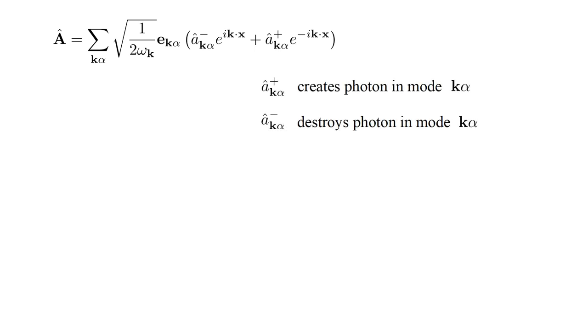The operator â†_{k,α} creates a photon in mode k,α. The operator â_{k,α} destroys a photon in mode k,α.